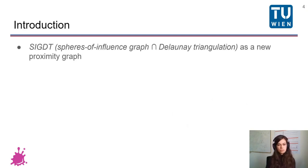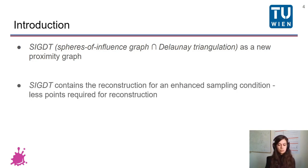And in order to solve this, we have introduced a new proximity graph which is a graph which encodes the closeness of points. It's an intersection between the spheres of influence graph and the Delaunay triangulation. We have also proved that we require less points for reconstruction than previous methods and we have used this graph in combination with some steps from another curve reconstruction method in order to achieve the best results for manifold reconstruction.